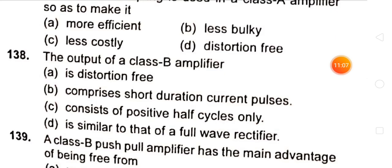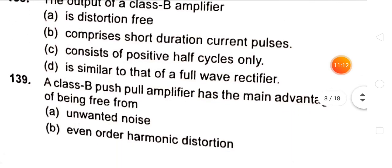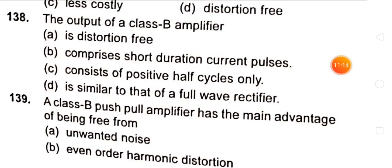The output of a class B amplifier consists of positive half cycles only. A class B push-pull amplifier has the main advantage of being free from even order harmonic distortion.